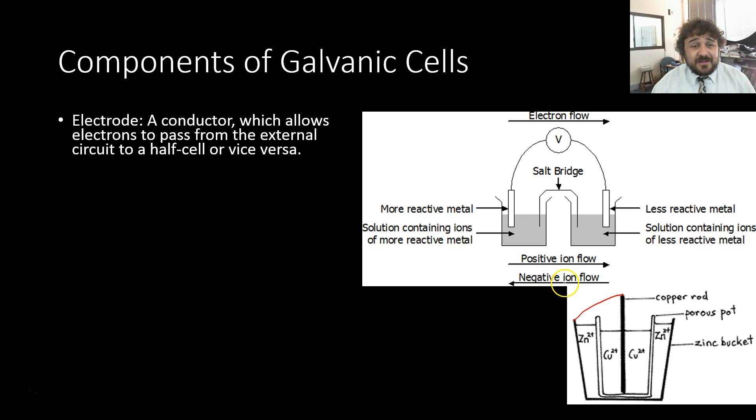First off, we need to talk about our electrodes. An electrode is basically a conductor and it's what allows electrons to pass from one half cell to the other. So here we have an electrode and here we have another electrode. Basically, this electrode over here attracts electrons from this electrode, so we have electrons traveling in this direction here.